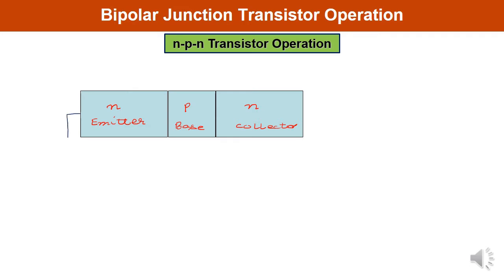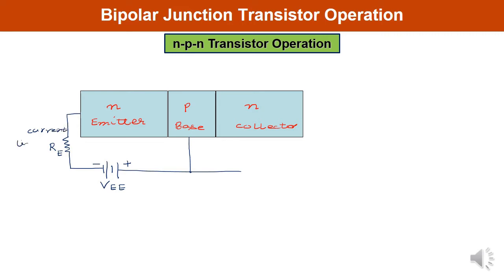A current-limiting resistor is connected at the emitter side. Since this must be forward biased, the emitter is connected with the negative terminal of the battery and the base is connected with the positive terminal — this voltage is VEE. Similarly, another current-limiting resistor is placed at the collector side. The collector-base junction must be reverse biased, so N is connected with the positive terminal and P with the negative terminal — this is VCC.